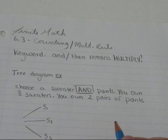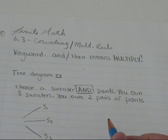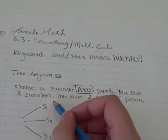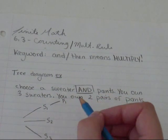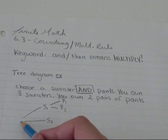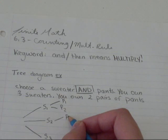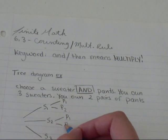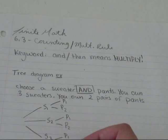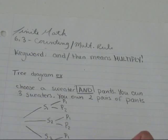You own two pairs of pants. So then I have two options for my smaller branches. I can choose Sweater 1 and Pants 1, or I can choose Sweater 1 and Pants 2. I can choose Sweater 2 and Pants 1, Sweater 2 and Pants 2. Or I can choose Sweater 3, Pants 1, Sweater 3, Pants 2.